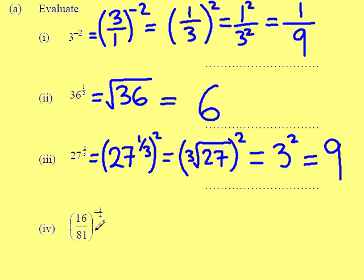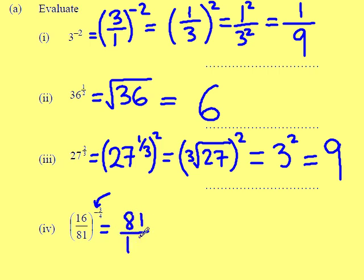16 over 81, all to the power of minus 3 quarters. A minus means reciprocal, so I'm going to flip it upside down. That removes my negative, leaving me with 81 over 16, all to the power of 3 quarters. I can split that into two parts: 81 over 16 to the power of a quarter on both, before I eventually cube them.